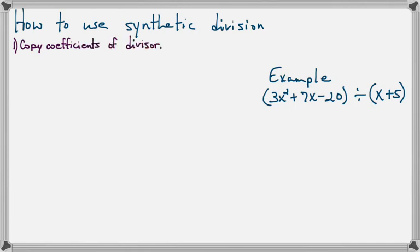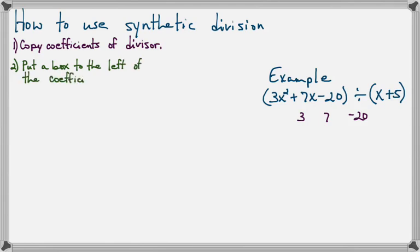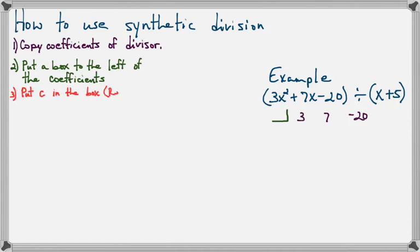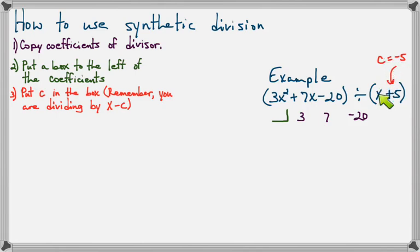So the first thing you do is copy the coefficients of the divisor — there they are. The next thing is to put a box to the left of the coefficients. There's our box, and what goes in the box is the solution to x plus 5 equals 0. You can always take whatever this number is and use its opposite. So we're dividing by x plus 5, which means c is negative 5, because that's the solution to the equation. But remember, we're not dividing by negative 5 — we're dividing by x minus c, and that becomes important later.